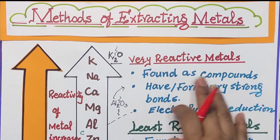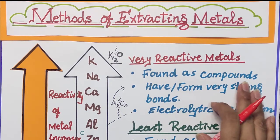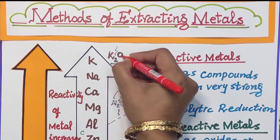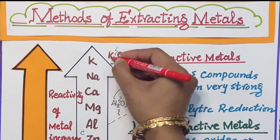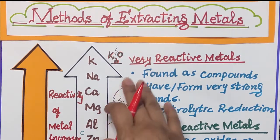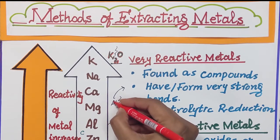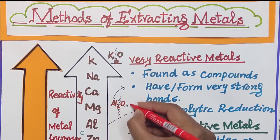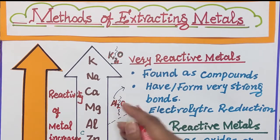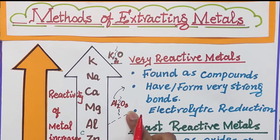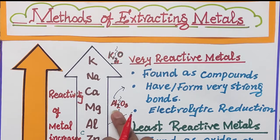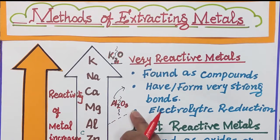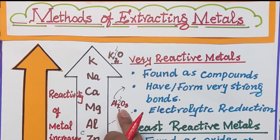Very reactive metals are found as compounds. For example, if a very reactive metal is found as a compound like K₂O, how can we extract potassium metal from this? Or if we have a compound of aluminium like Al₂O₃ (aluminium oxide), how can we get this aluminium out? We have to extract this aluminium from its compound.